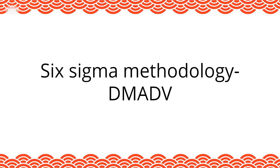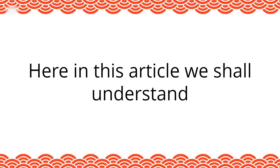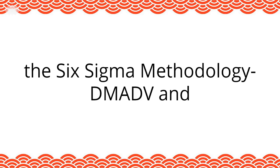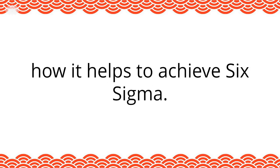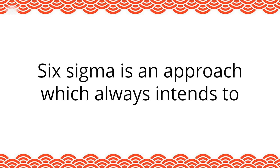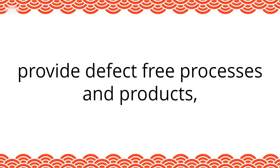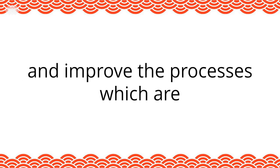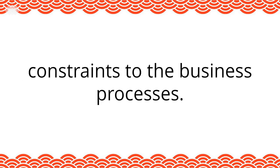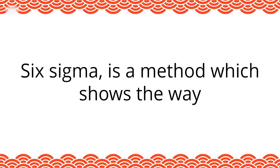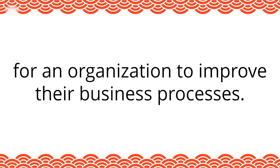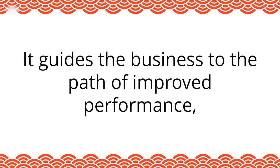Six Sigma Methodology. In this article, we shall understand the Six Sigma Methodology and how it helps to achieve Six Sigma. Six Sigma is an approach which always intends to identify defective processes and products and improve the processes which are constant to the business. Six Sigma is a method which shows the way for an organization to improve their business processes, guiding the business to the path of improved performance.